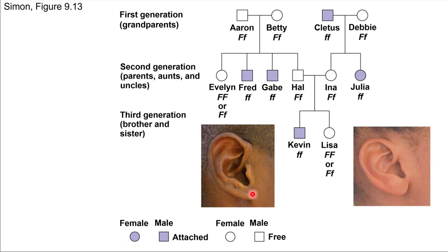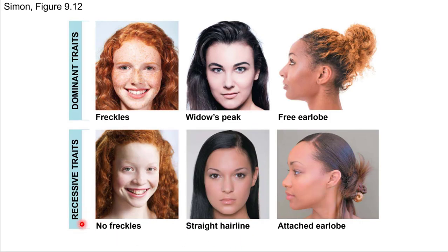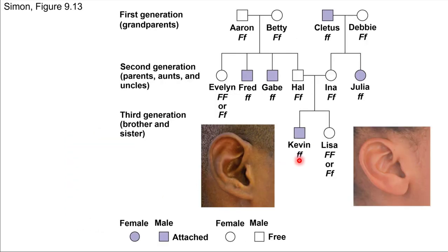Kevin has attached earlobes, and we know that having attached earlobes is recessive. So Kevin must be homozygous recessive as far as genotype is concerned. His sibling — connected with a horizontal line on the pedigree — does not have attached earlobes, so they have at least one uppercase allele, though it could be one or two. The fact that Kevin is homozygous recessive means he got a lowercase f from both his mom and his dad. So both mom and dad have to have a lowercase f present, but since neither had attached earlobes, they also have an uppercase f. Right there, we figured out their genotypes — heterozygous and heterozygous — based on looking at their kids.